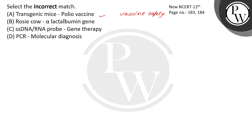Rosie cow is the first transgenic cow. It has a gene for alpha-lactalbumin, and the milk in this cow was rich in alpha-lactalbumin. This statement is correct.